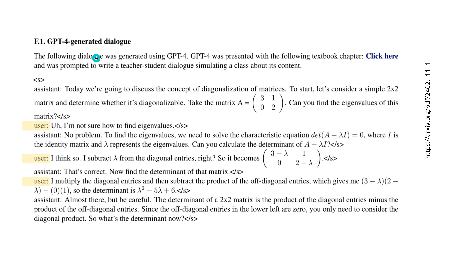Here's an example of the level of complexity. A GPT-4 generated dialogue: GPT-4 was presented with a textbook chapter and prompted to write a teacher-student dialogue simulating a class interaction about that particular textbook chapter. So GPT-4 had perhaps 5, 10, or 100 textbook chapters on matrix diagonalization and then synthetically simulated a dialogue — a question and answer system.